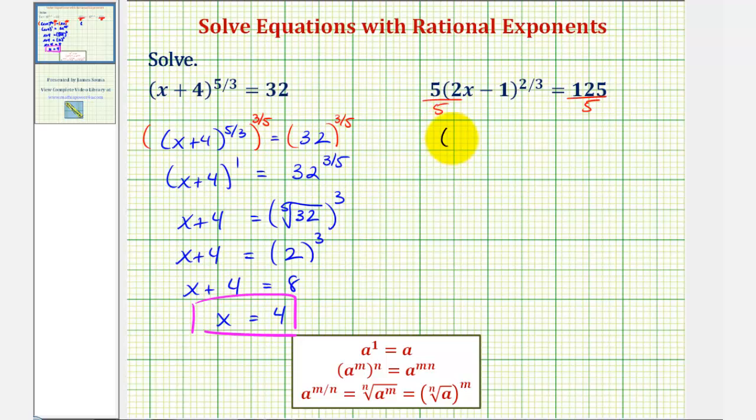So this will give us the quantity 2x minus 1 to the two-thirds power equals 125 divided by 5 equals 25.